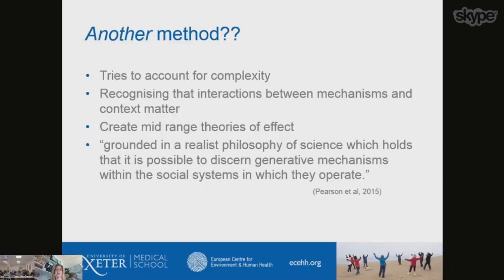There are loads of methods within quantitative systematic review and lots of methods in qualitative evidence synthesis — so why do we need another method? Realist review has been proposed as a way of thinking about complexity in questions which are subject to systematic review. You can also have realist evaluation for complex interventions in primary research. It takes a different perspective to traditional positivist research, particularly in the recognition that interactions between mechanisms and contexts are really important. It's not just does something work — it's how does it work in this context with this mechanism. It wants to explore, create, and sometimes test mid-range theories of impact.